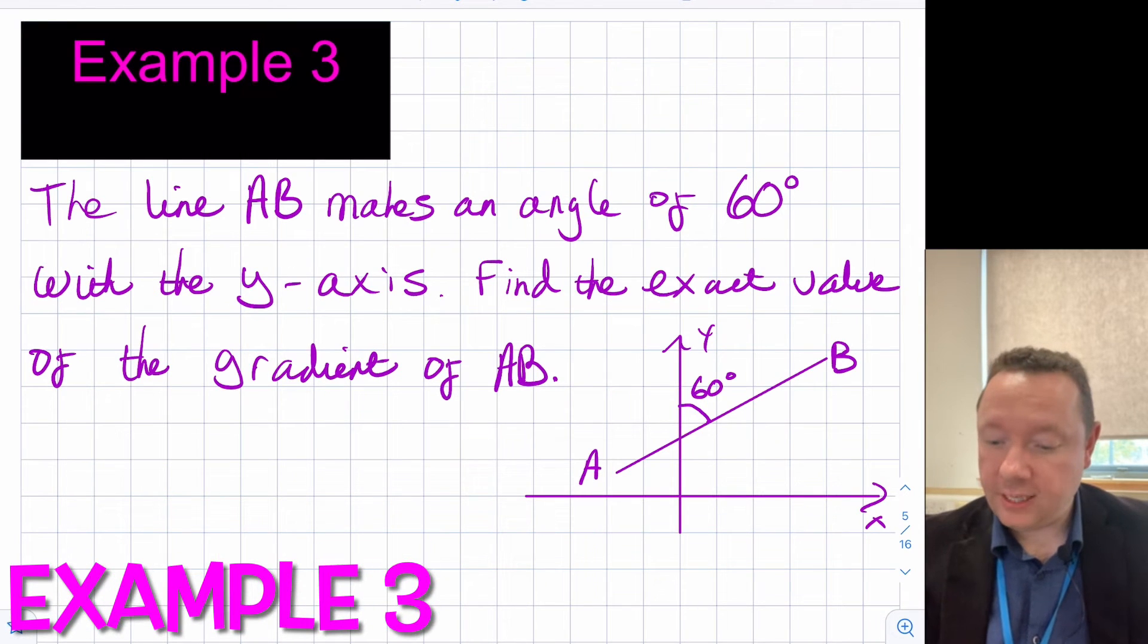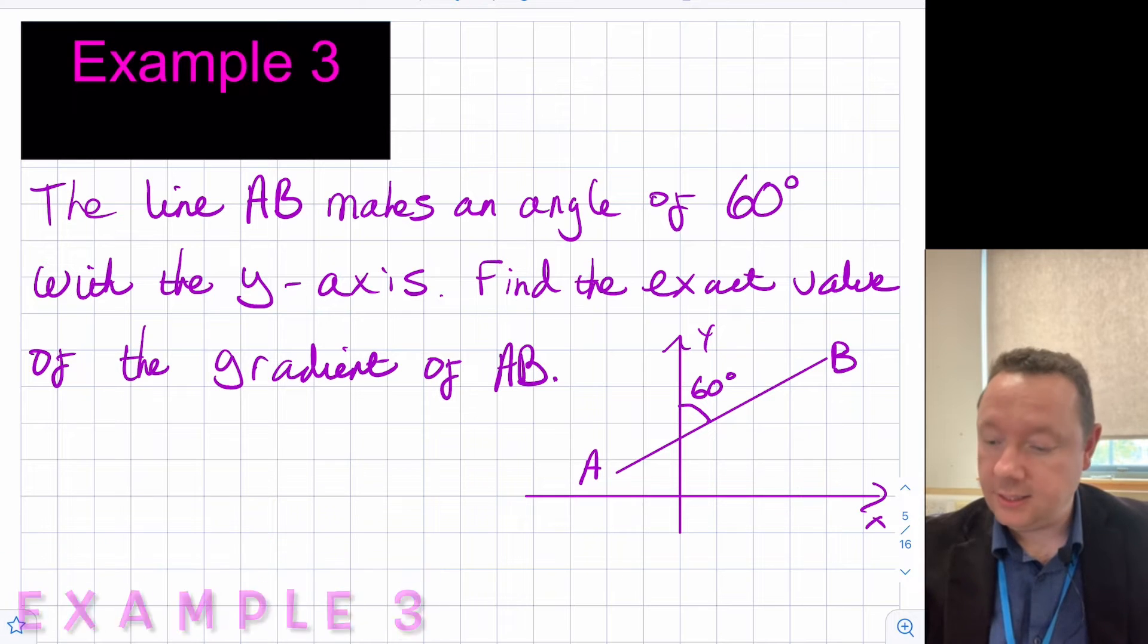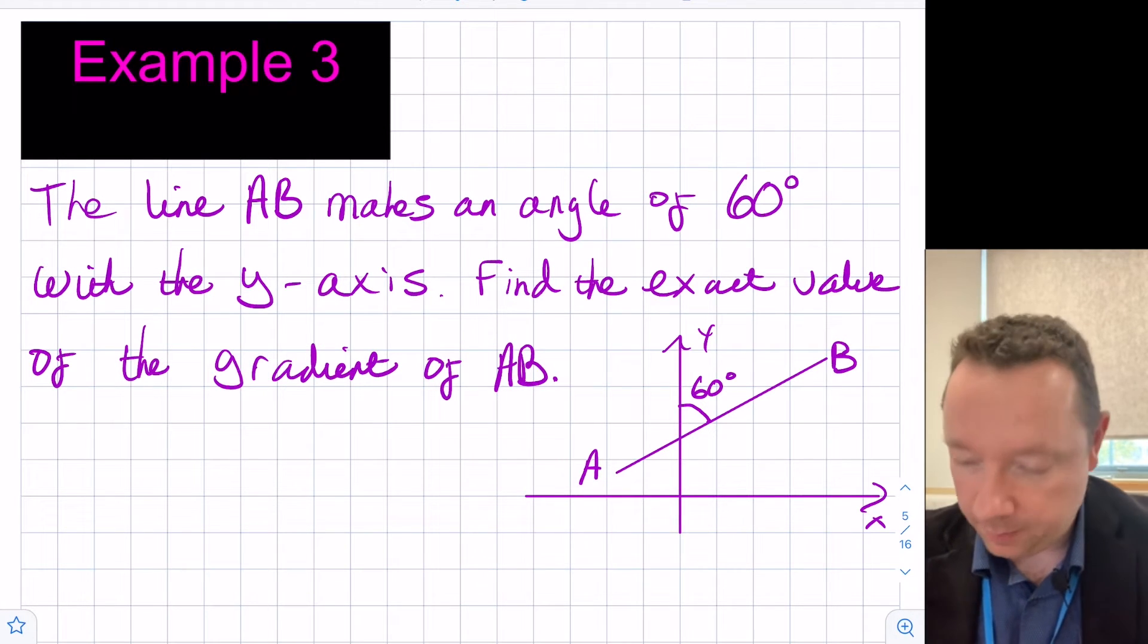Example three says the line AB makes an angle of 60 degrees with the y-axis. Find the exact value of the gradient AB. So we've got a picture here again where the angle is with the y-axis. Now that's not the gradient. Remember, gradient is the angle it makes with the x-axis. So I need to draw myself a little diagram here. If I draw a horizontal line, that's our theta in here.